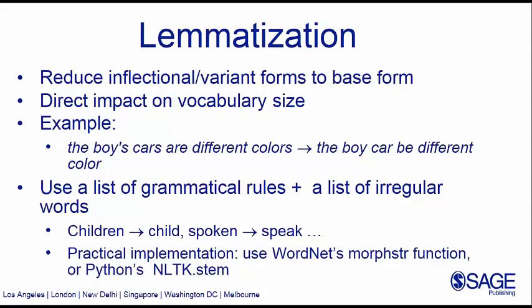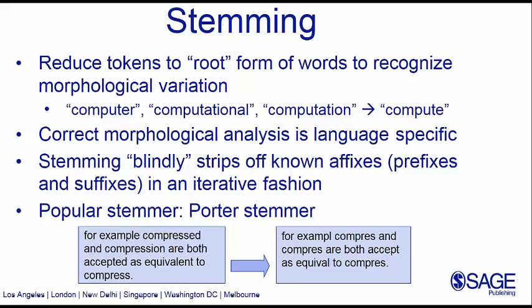Another common preprocessing tool is stemming — a rule-based process that truncates words, which is fine when the end user is not a human. For instance, a text mining process needs to understand commonalities between words like 'computer,' 'computational,' and 'computation' — it would be fine to truncate those and identify the same stem 'compute,' then count how many compute-related words appear in a text. This is not appropriate when the end user is a human, since we cannot afford non-linguistic truncation. Text mining processes are often built layer by layer, with stemming as one of the initial layers.